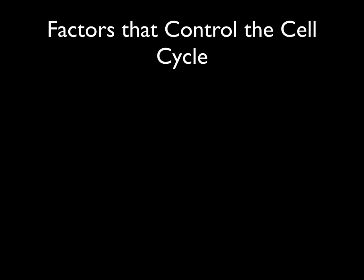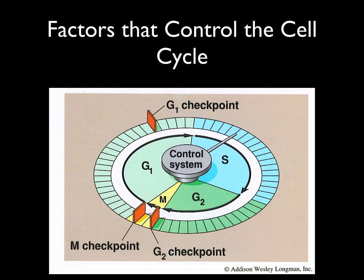Throughout the cell cycle, there are several places where a cell will stop and check if it's done everything it needs to do before moving on. This figure shows where three important checkpoints are located: a checkpoint near the end of growth phase 1, a checkpoint at the end of G2 phase, and a checkpoint during mitosis. The G2 checkpoint was mentioned in discussing MPF — the cell halts there, and if MPF is produced in sufficient quantity, the cell moves on into mitosis. Of the three checkpoints, the G1 checkpoint — commonly called the restriction point — is probably the most important.